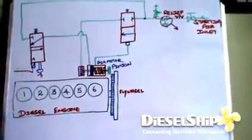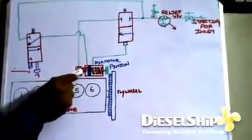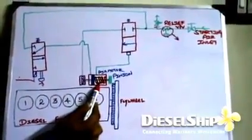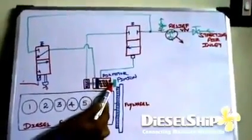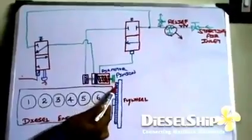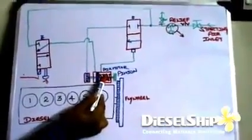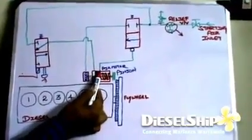So after the valve, the main line goes to the air motor which has a piston here. The piston is spring loaded, and as the air pushes the piston down, the pinion moves down and engages with the flywheel. And as the piston goes here, the air passes through. This port is uncovered.